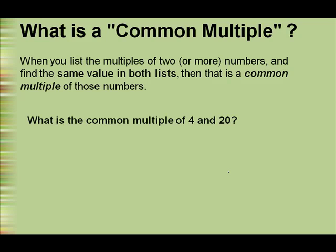So what is the common multiple of 4 and 20? So first let's write the multiples of 4. 4 times 1 is 4, 4 times 2 is 8, 4 times 3 is 12, 4 times 4 is 16, 4 times 5 is 20, 4 times 6 is 24, 4 times 7 is 28, and we can keep going.